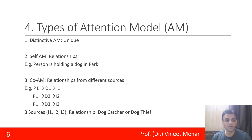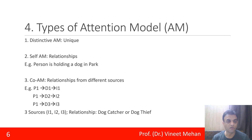There are various types of attention models. The first is the distinctive attention model — 'distinctive' means unique, so whatever unique objects are present in the image are given more focus. The second type is the self-attention model, where relationships within the data are identified.